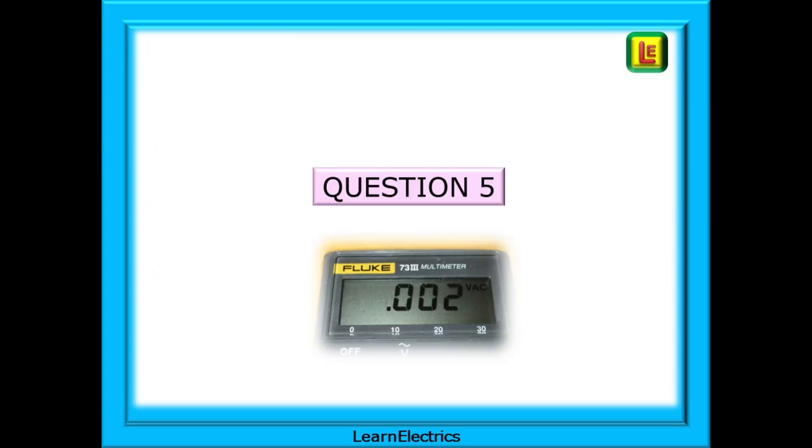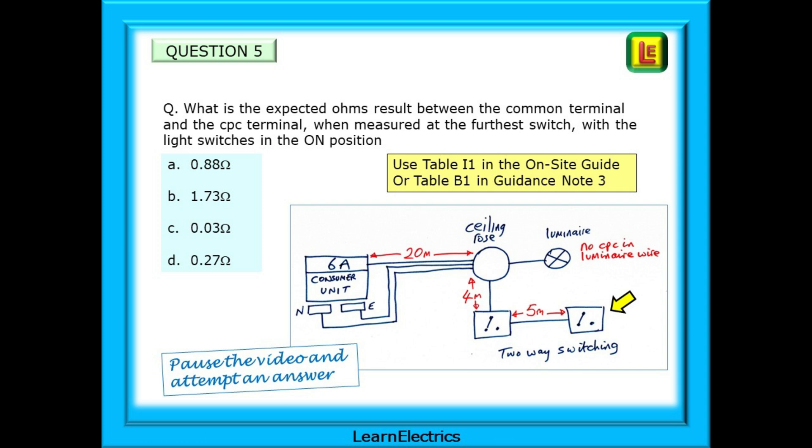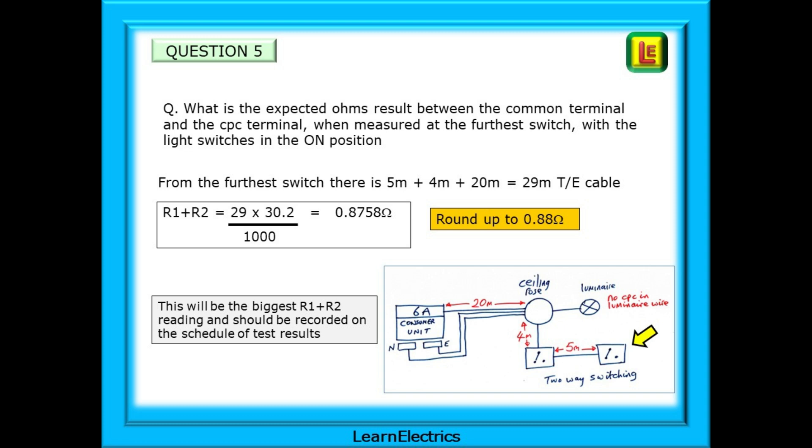Next is question 5. You may need to use the detailed sketches that we made for this one. What is the expected ohms result between the common terminal and the CPC terminal when measured at the furthest switch with the light switches in the on position. This is going to be the longest length of circuit wiring and the test meter readings at the switches will be bigger than the readings measured at the ceiling rose. There is more copper to go through. From the furthest switch there is 5 metres plus 4 metres plus 20 metres which equals 29 metres of twin and earth cable. 30.2 milli ohms per metre is still valid for the cable and all that we must do now is to put the numbers into the calculator. R1 plus R2 is equal to 29 multiplied by 30.2 and all divided by 1000.